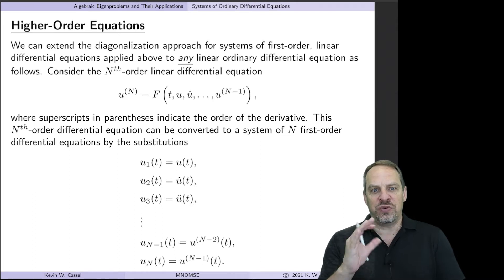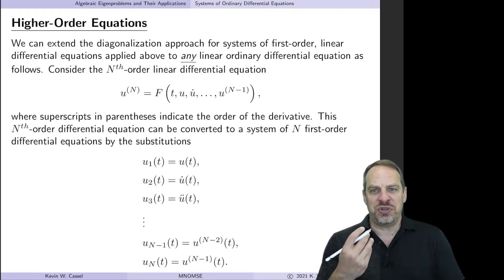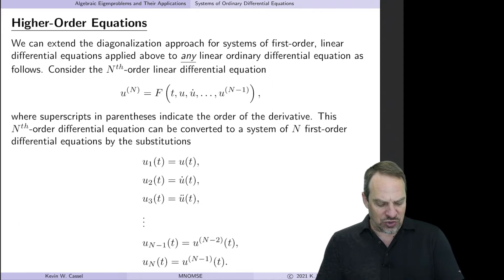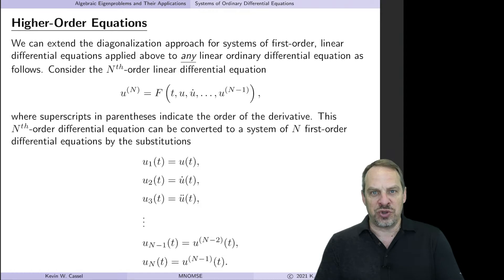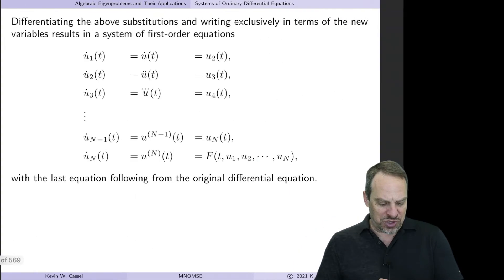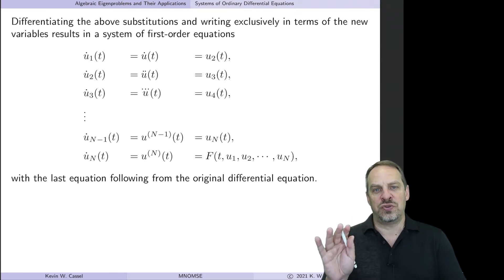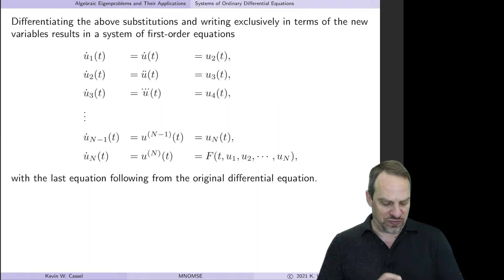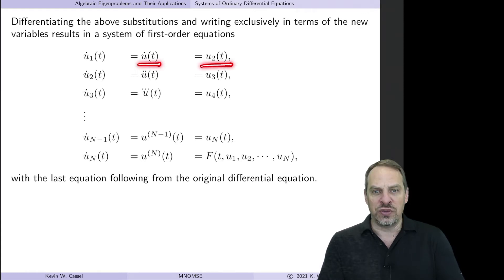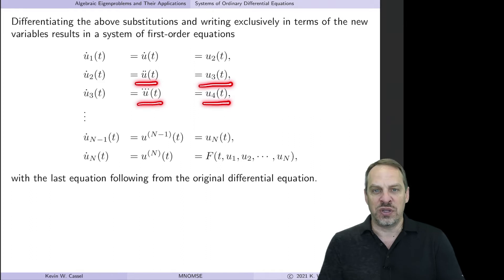To get our equivalent first-order system, we take the substitution and simply differentiate each equation. So U1-dot equals U-dot, U2-dot equals U-double-dot, U3-dot equals U-triple-dot, and so forth. Then we substitute back: U-dot is just U2, U-double-dot is just U3, U-triple-dot is just U4. We don't want to see any of the original variable U — everything must be in terms of U1, U2 through UN.